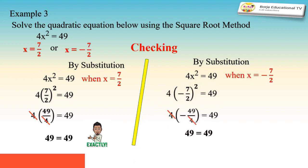Next, when x = -7/2, substituting into 4x² = 49 gives 4 · (-7/2)² = 49. Squaring -7/2 gives positive 49/4; multiplying by 4 cancels the denominator, giving 49 = 49. Therefore, negative 7/2 also satisfies the equation 4x² = 49.